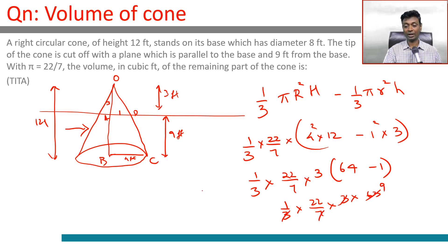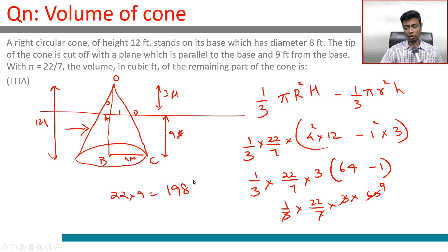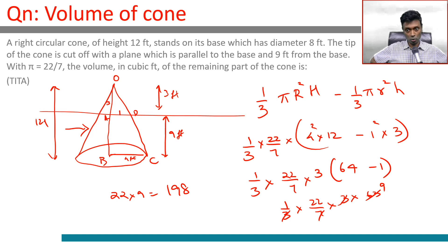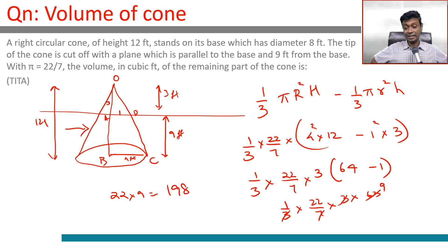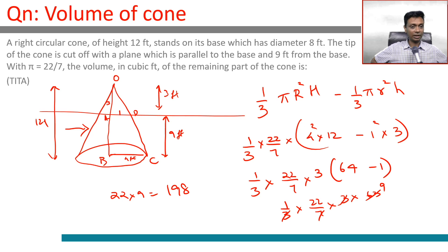The result is 22 × 9 = 198 cubic feet. To summarize: volume of frustum = 1/3 pi r² h (large cone) minus 1/3 pi r² h (small cone). The large cone has radius 4 and height 12; the small cone has radius 1 and height 3. So 4² × 12 minus 1² × 3 equals 3 × 63, and multiplying through gives the final answer of 198 cubic feet.